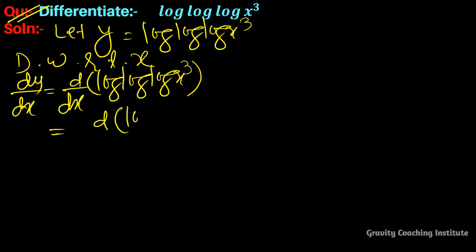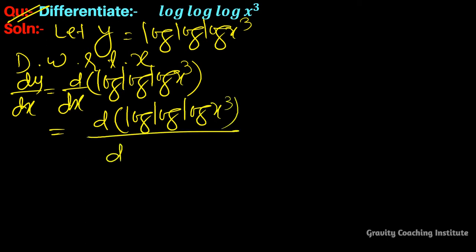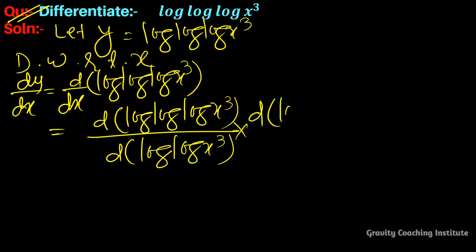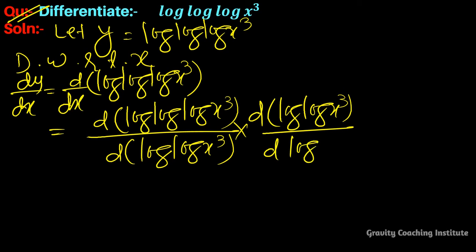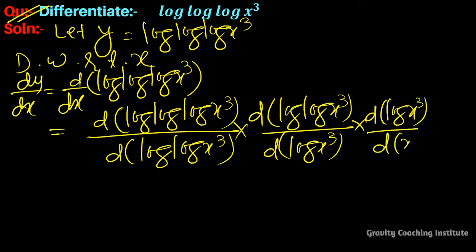Applying the chain rule: d/dx of log(log(log(x³))) equals 1/log(log(x³)) times d/d(log(x³)) of log(log(x³)) times the derivative of log(x³) with respect to x³, times the derivative of x³.